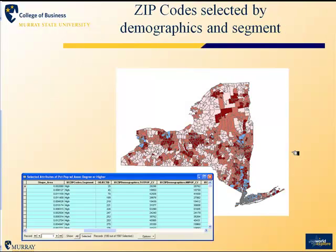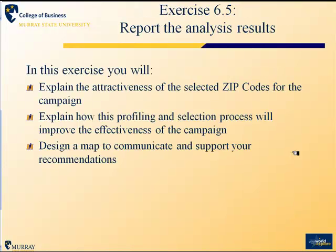This is the way that process will look. We will identify the zip codes in New York which most closely match the characteristics of our high subscriber segment, and those will be our targets.